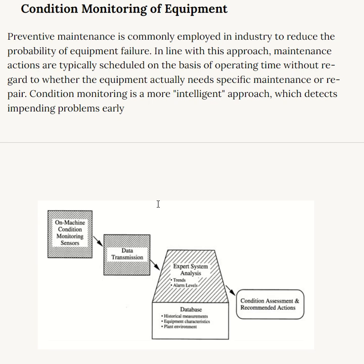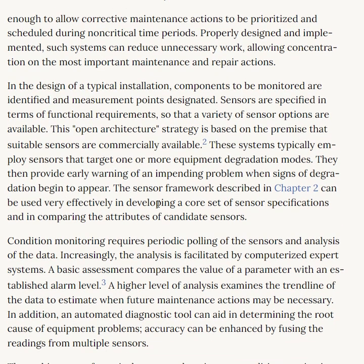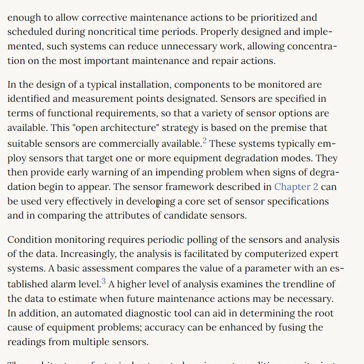For condition monitoring of equipment, preventive maintenance is commonly employed in industry to reduce the probability of equipment failure. Maintenance actions are typically scheduled based on operating time without regard to whether the equipment actually needs specific maintenance. Condition monitoring is a more intelligent approach that detects impending problems early, allowing corrective maintenance actions to be prioritized and scheduled during non-critical time periods. Properly designed systems can reduce unnecessary work and allow concentration on the most important maintenance and repair actions.